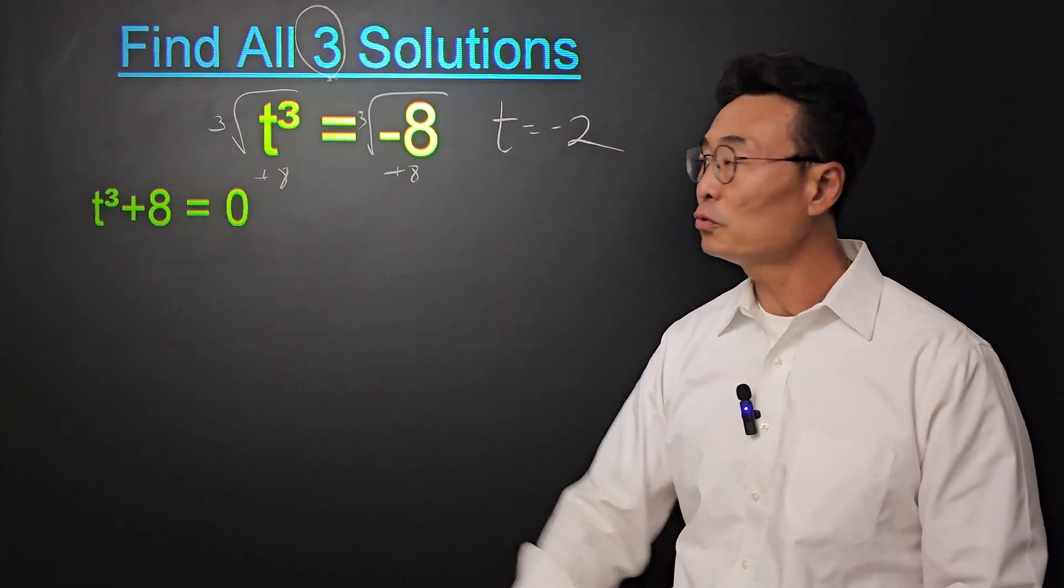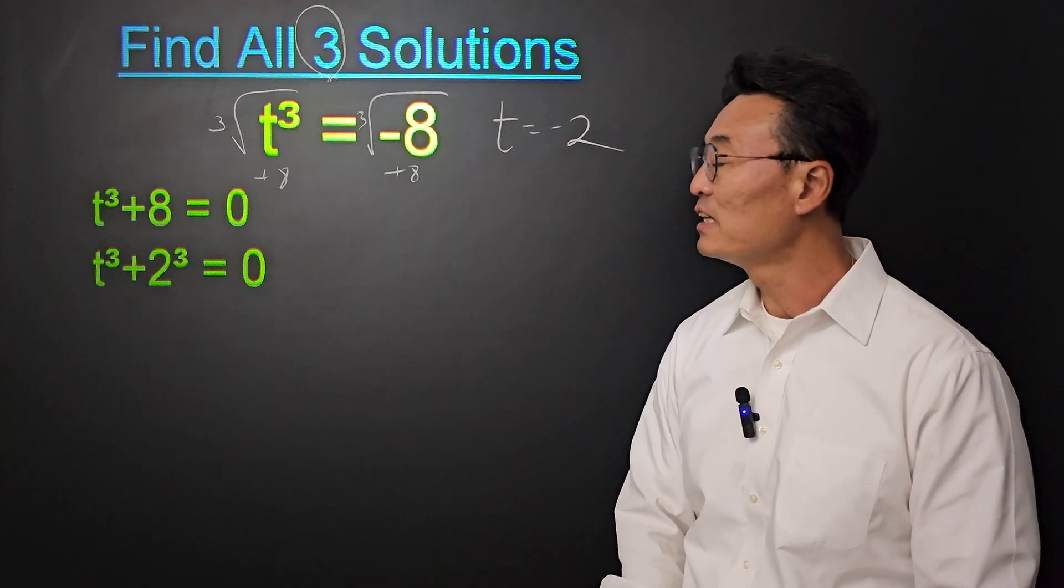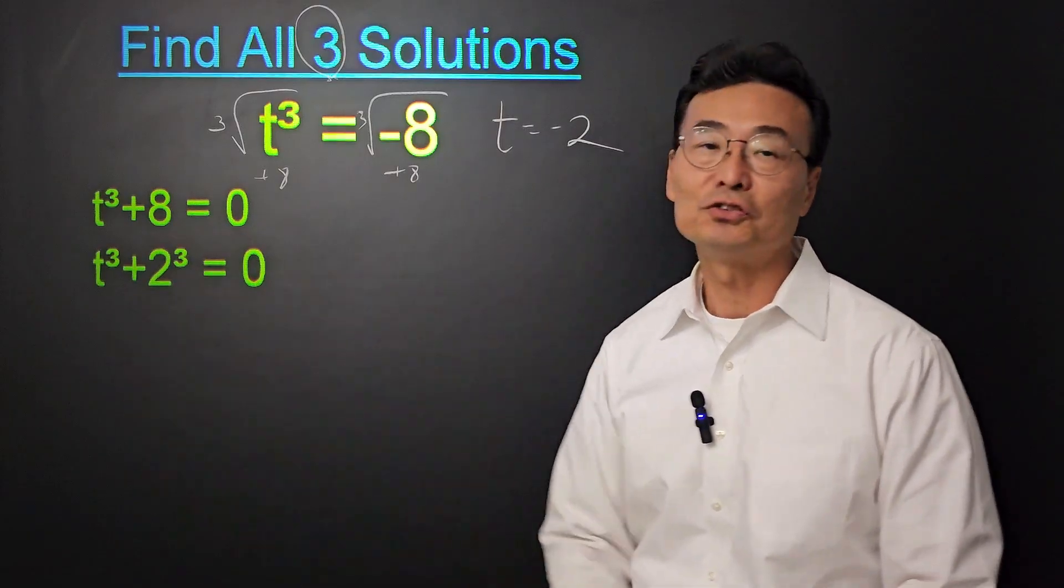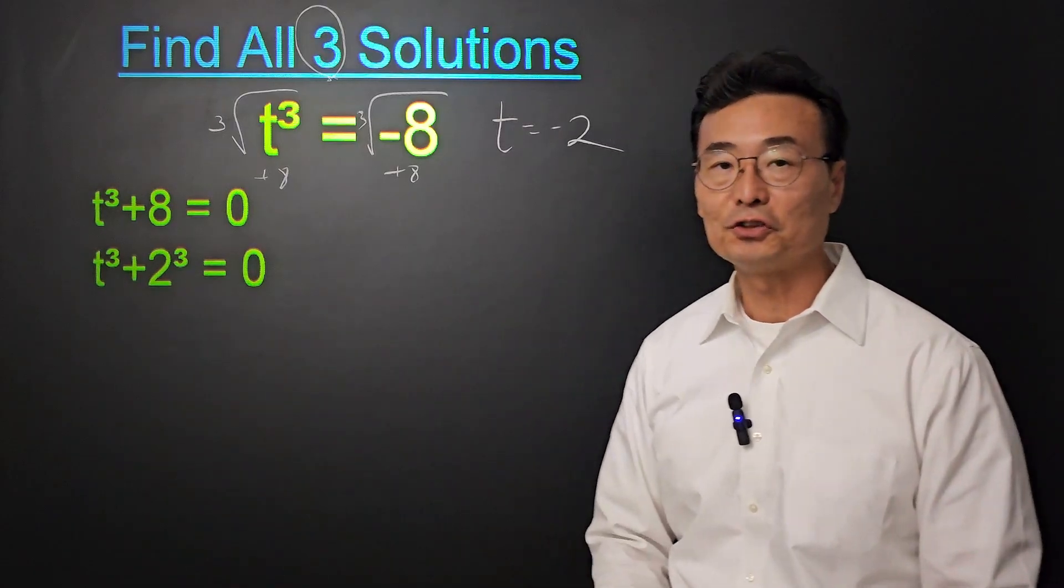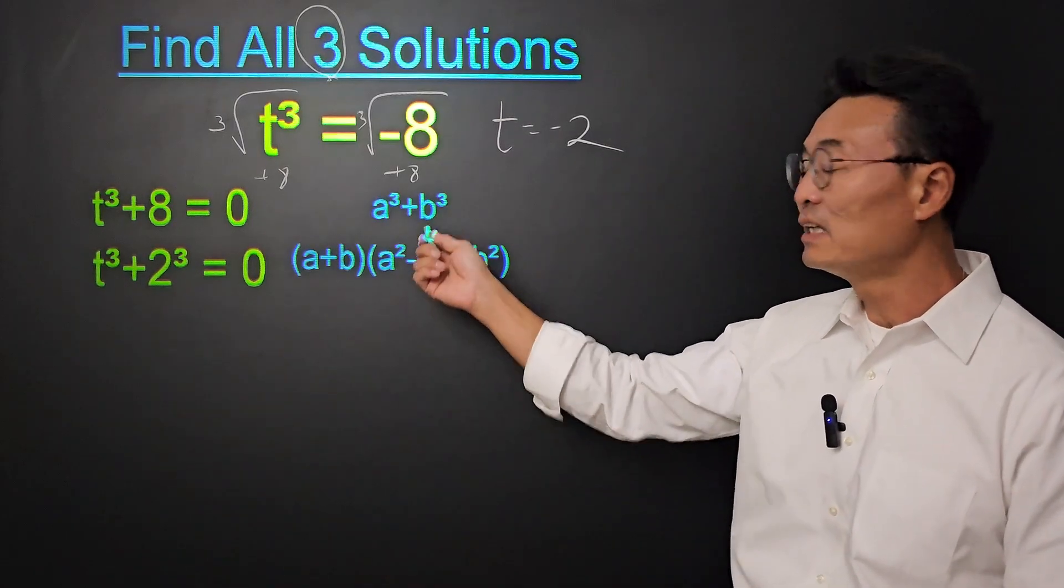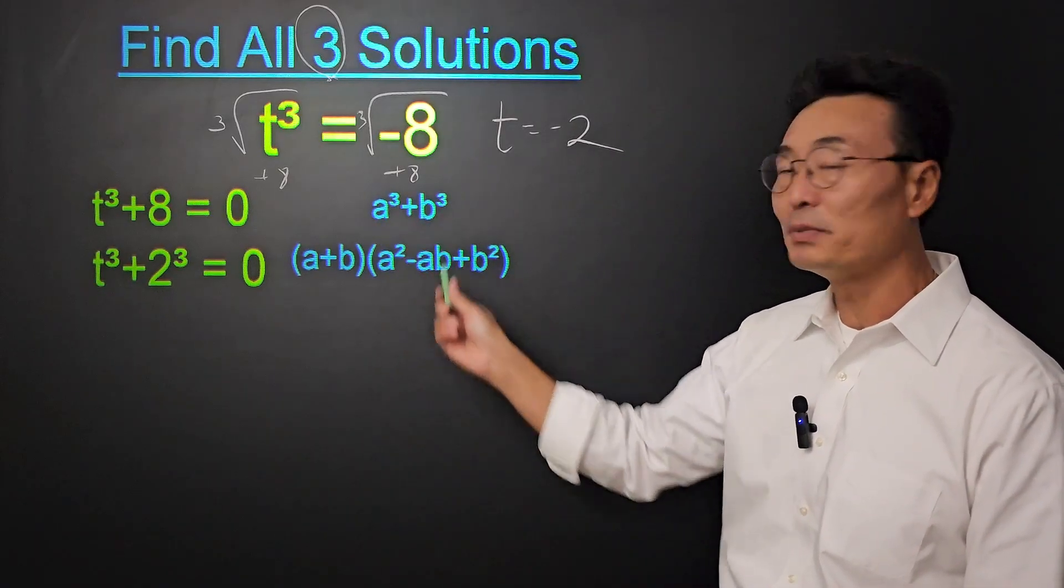And then to solve for t, we're going to be factoring this. To factor, the first thing we want to do is make that 8 into 2 cubed. And then to factor t cubed plus 2 cubed, we're going to be using this sum of cube formula. What it is, is that we have a cubed plus b cubed.